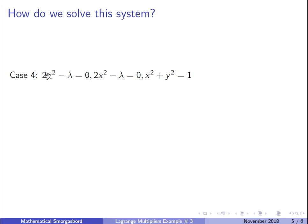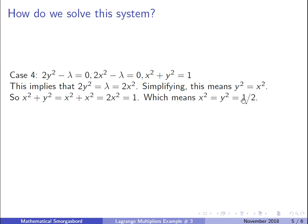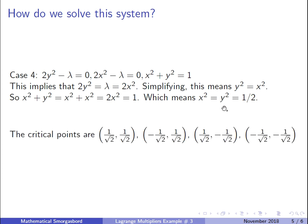Case 4: we have 2y²−λ=0, 2x²−λ=0, and x²+y²=1. Solving each for λ gives λ=2y² and λ=2x², so y²=x². Substituting into the constraint: x²+x²=1, so 2x²=1, meaning x²=½ and y²=½. Therefore x=±1/√2 and y=±1/√2, giving four critical points from the sign combinations.